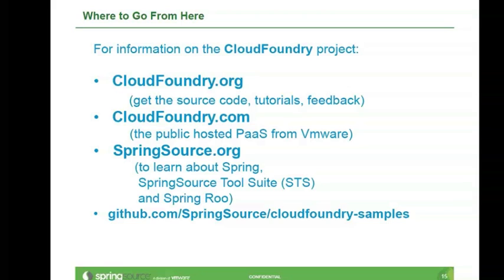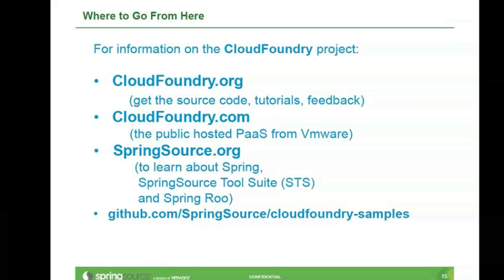There are a lot of places you can go to find more information. Obviously, cloudfoundry.org is the real starting point. That's where you can find access to the Git repository. You can clone that Git repository for yourself — there's a README there that describes how to build your own local cloud and run it on a virtual machine. And that's also where you can sign up for an account so that you can deploy your applications on cloudfoundry.com.